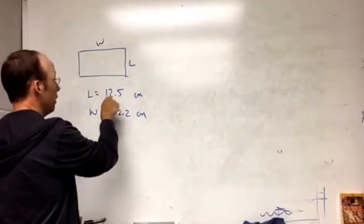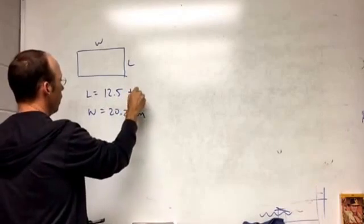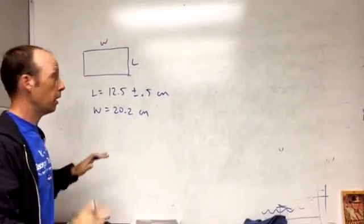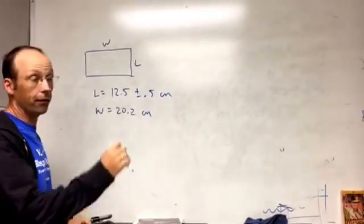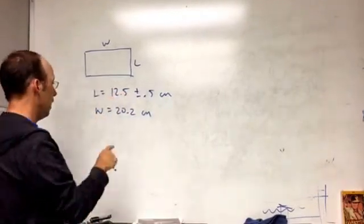So in this case I'm going to get, let's say the uncertainty is 12.5 plus or minus 0.5 centimeters. I just made that up. We'll talk about where to get that number later, but really it's just an estimate based on my measurement.